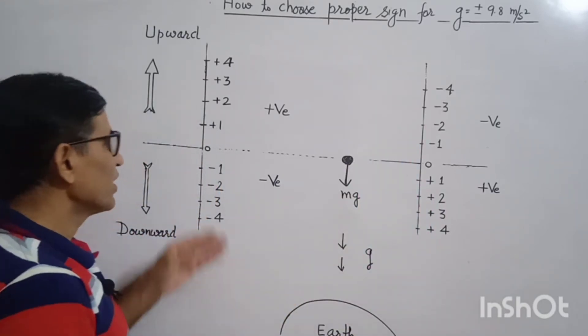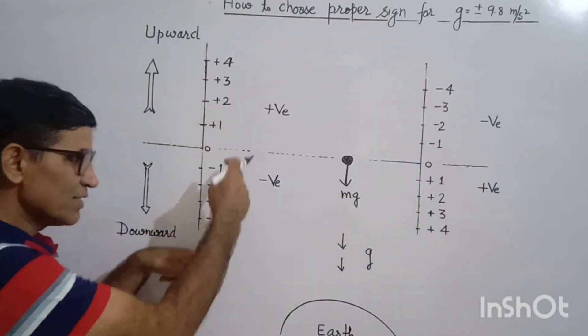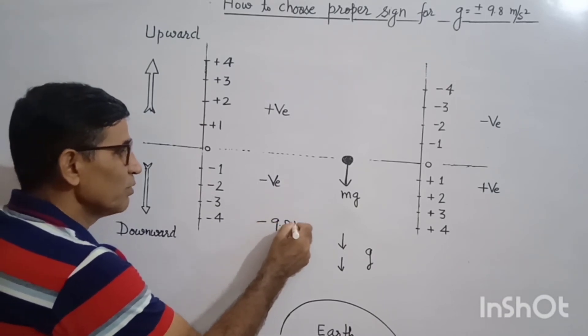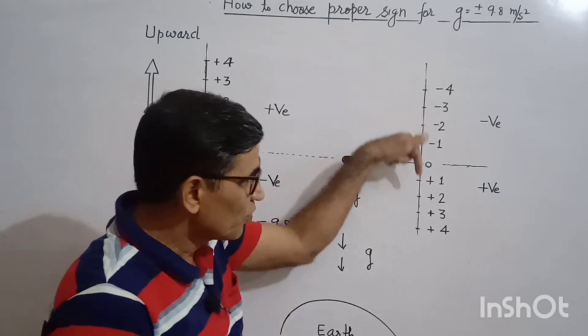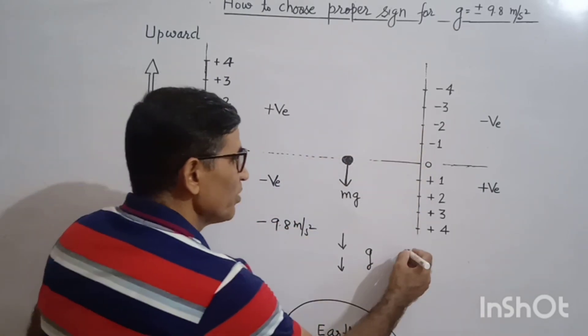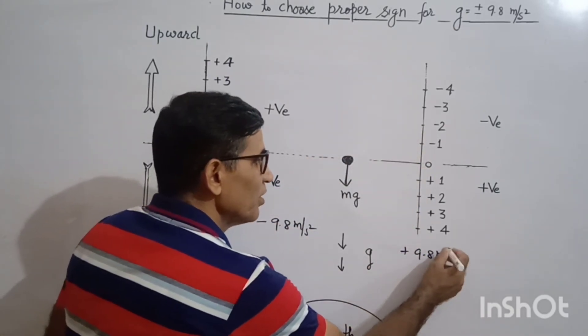So if I have taken this downward direction as negative, so here g is taken minus 9.8 meter per second square. If I have taken the downward direction as positive, so g will be plus 9.8 meter per second square.